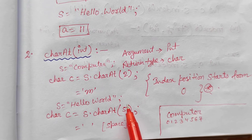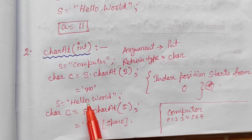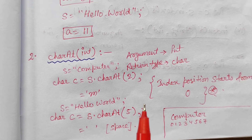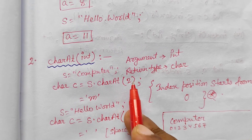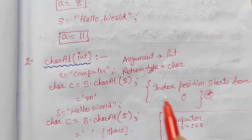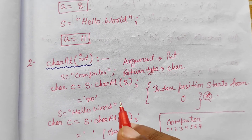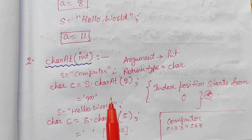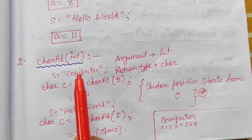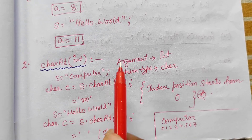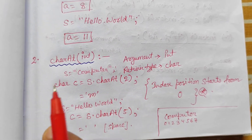Similarly, for "hello world", s.charAt(5) — positions 0-1-2-3-4-5 — position 5 is space, so it returns space. If someone writes s.charAt(8) for "computer", position 8 is not there, so it will return a runtime exception error called IndexOutOfBoundsException — the index position is out of boundary. That is our charAt() function.